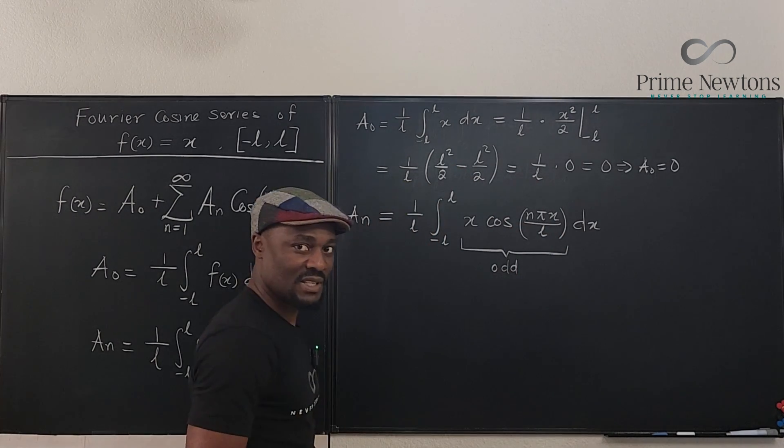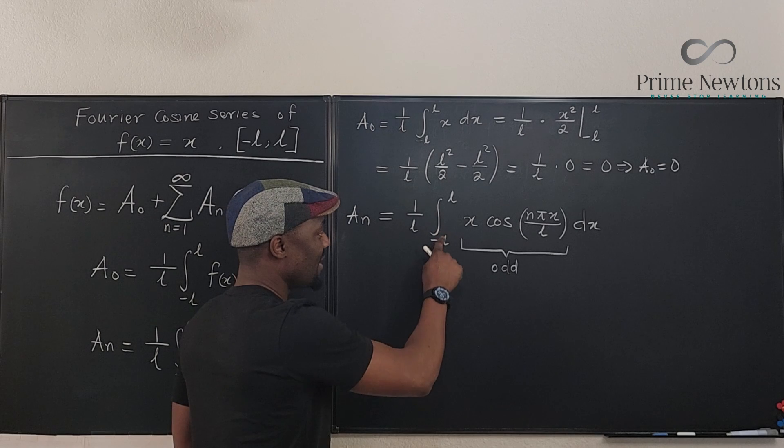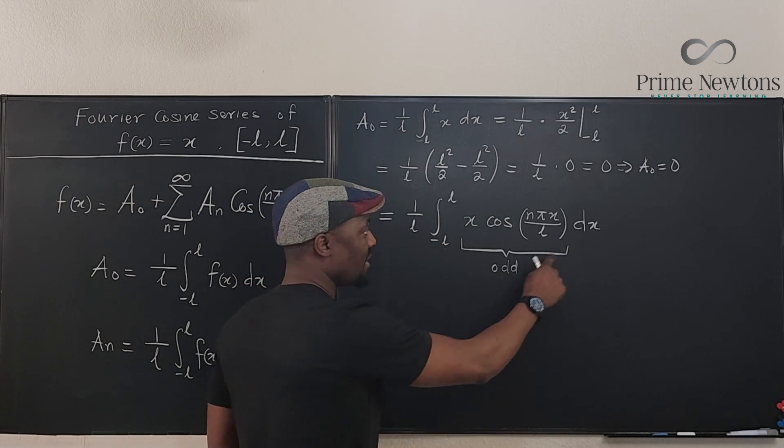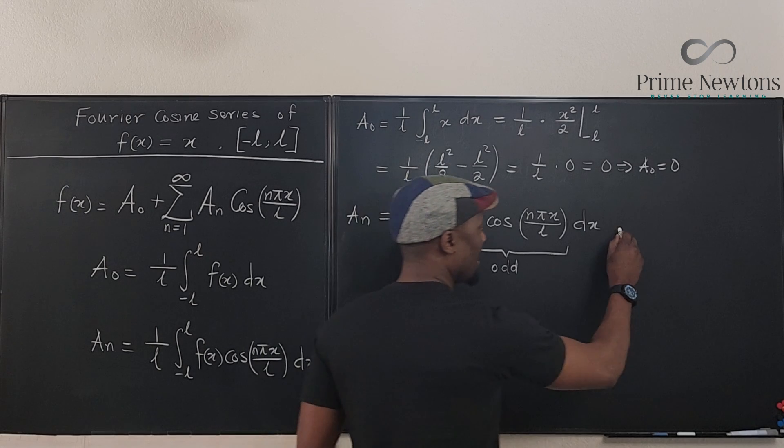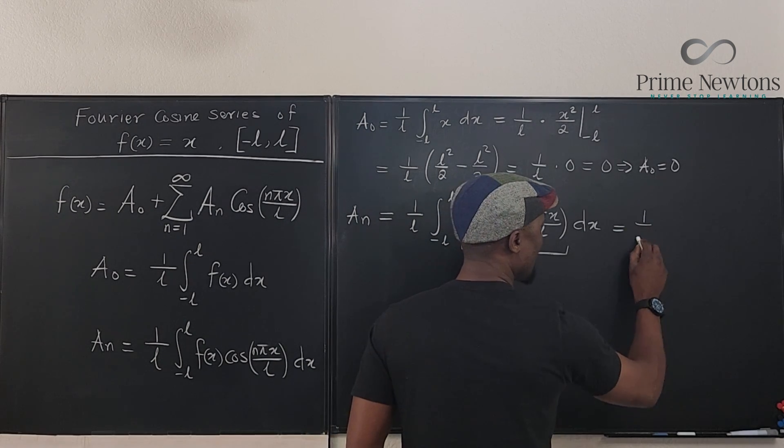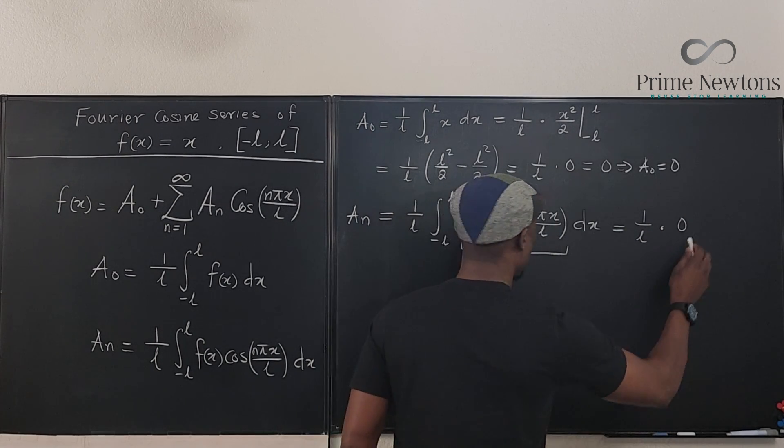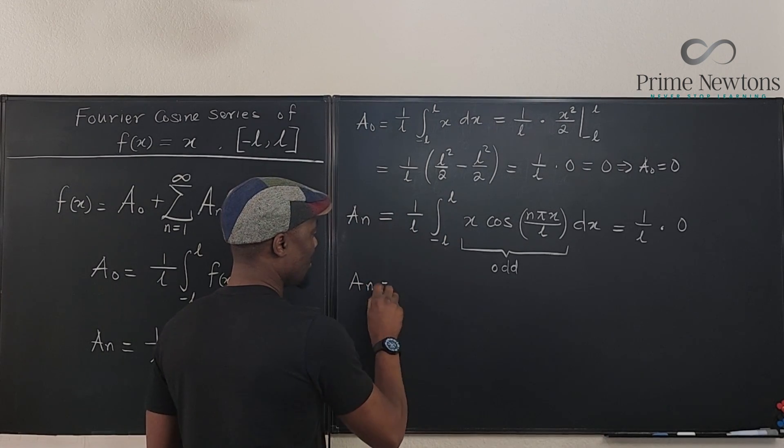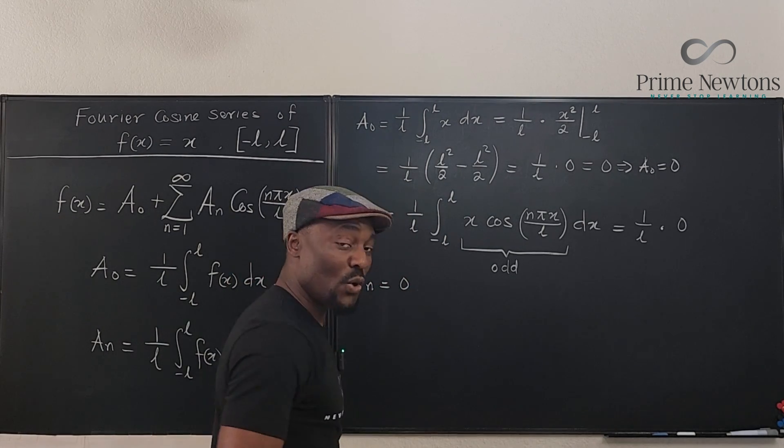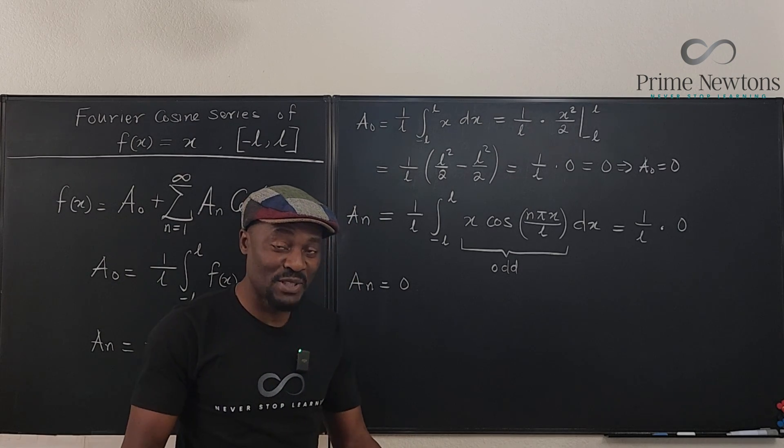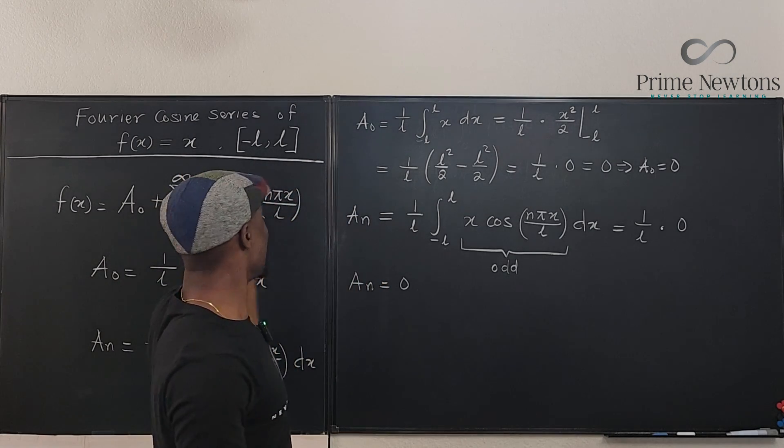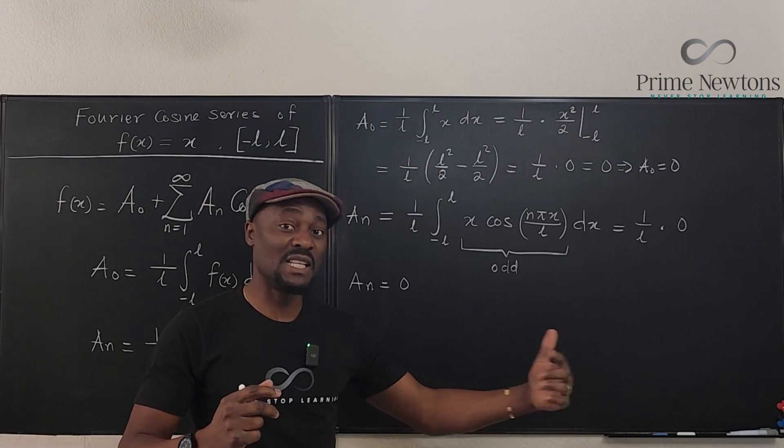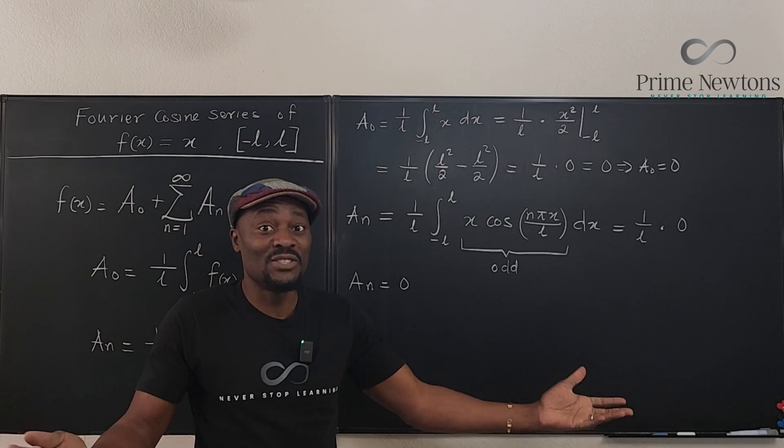As we have seen in the previous example. So you notice that if you go from negative L to L, you're going to obtain a zero here. This is 1/L multiplied by zero, which also tells us that a_n is equal to zero. So all the coefficients you're going to obtain for f(x) = x and the Fourier cosine series will be zero. So you will not have anything in terms of cosine.